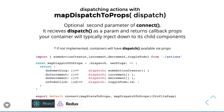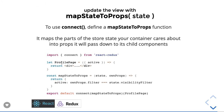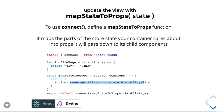We use two things: mapStateToProps and mapDispatchToProps. mapStateToProps defines the mapping of local props with the state coming from Redux. For example, the active property becomes available in the ProfilePage component as a prop, but the data itself comes from the Redux store — comparing ownProps.filter equal to state.visibilityFilter.